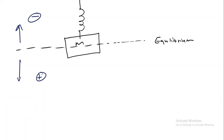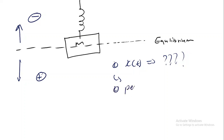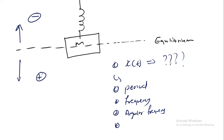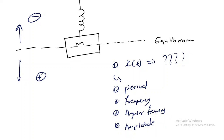What are you required to know? You are required to know how to calculate x(t). x(t) is the equation of motion of the spring-mass system at any time t. You are also required to calculate the period, the frequency, the angular frequency, and the amplitude.